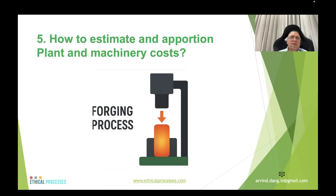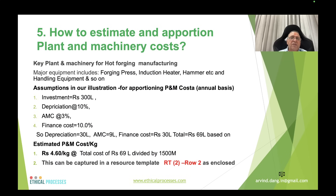For plant and machinery cost, key equipment includes forging presses, induction heaters, hammers, and handling equipment. Assuming investment of ₹300 lakhs, with depreciation at 10% (₹30 lakhs), AMC at 3% (₹9 lakhs), and finance cost at 10% (₹30 lakhs), the total is ₹69 lakhs. The cost per kg works out to ₹69 lakhs ÷ 1,500 metric tons = ₹4.60 per kg, captured in row 2 of resource template RT2.